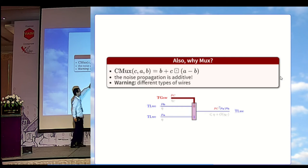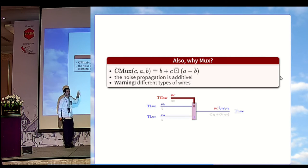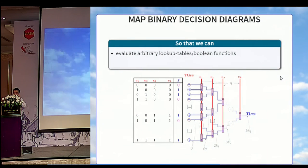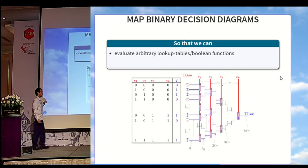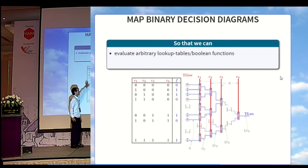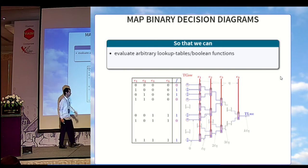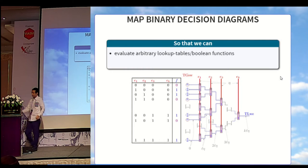You can see that the noise propagation is additive, but we have to pay attention that since we use an external product, the GSW ciphertext, which corresponds to the condition, must be an integer of GSW, and all the other wires, A, B, and the output, must be LWE. Now we can see that we can map a lot of classical circuits. This one is the balanced MUX diagram that will compute an arbitrary lookup table or an arbitrary Boolean function. This circuit is classical. I won't describe it too much. Just, we have to make sure that we can connect it with our MUX gate. As long as all the inputs are GSW ciphertext and the rest of the wires are LWE ciphertext, we are okay. We can connect the circuit. Secondly, if we look at the noise propagation, we'll see that the output noise is linear in the number of variables.